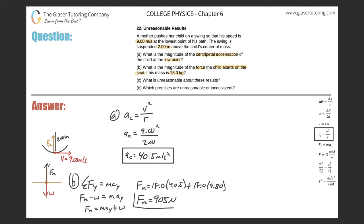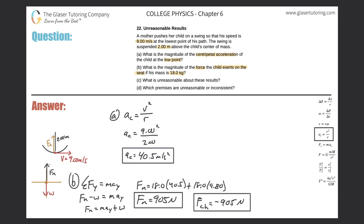So 905 newtons is the force that the seat is exerting on the child. By Newton's third law, the force that the child exerts on the seat would be negative 905 newtons, since it points in the opposite direction.